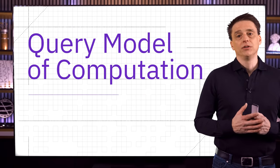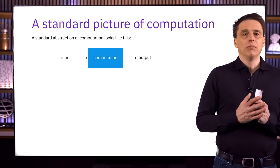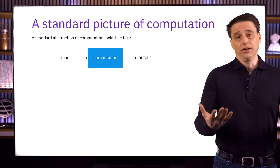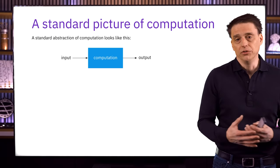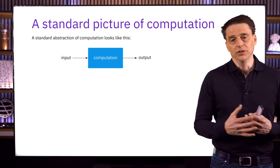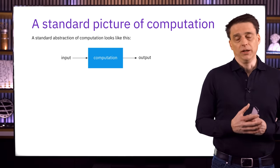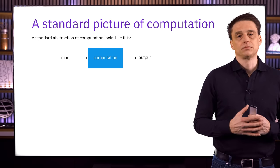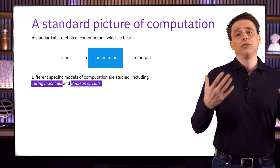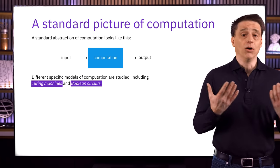To explain the query model, let's first begin with a more standard abstraction of computation. We have an input, which usually takes the form of a binary string, provided to the computation represented by a blue rectangle. The result is that some output is produced, also typically a binary string. This picture doesn't specify how the computation works — we can formulate different computational models such as Turing machines, Boolean circuits, or quantum circuits. This is about modeling isolated computational tasks, where the entire input is provided to the computation and nothing about the input is hidden from it.